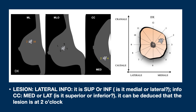Therefore, having the two standard projections plus the lateral projection, it is possible to locate a lesion exactly. From the lateral projection, I know that the finding is in the upper quadrant, but I don't know if it is medial or lateral — a question solved by the CC. The lesion is therefore located at 2 o'clock.